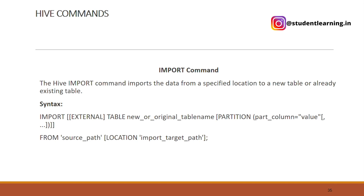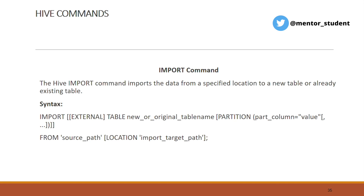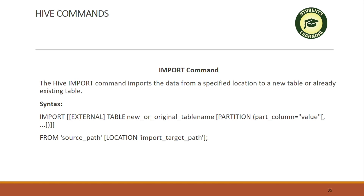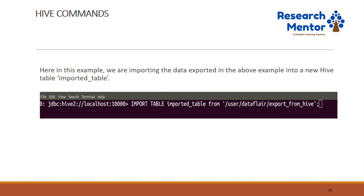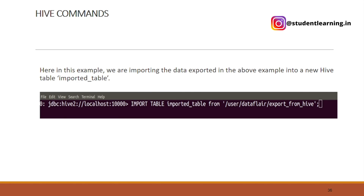The next is import command. The Hive import command imports data from a specific location to a new table or already existing table. Syntax: IMPORT TABLE new_or_original_table_name PARTITION (col=value) FROM source_path. For example, importing the data exported above into a new Hive table named 'imported_table': IMPORT TABLE imported_table FROM '/user/default/export_from_hive'.